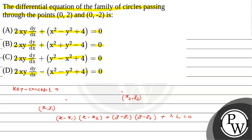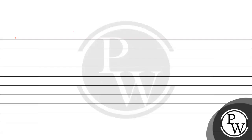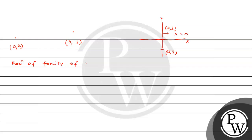Ab hamare paas jo diya hua problem hai: (0, 2) aur (0, -2) se equation of circle — family of circle pass karti hai. Agar hum loog dekhein yeh hamara (0, 2) aur (0, -2) — saath agar hum loog dekhein ki kaun si line banega, toh (0, 2) aur (0, -2) ko connect karne wali jo line ban rahi hai, equation of family of circle us par depend karega.